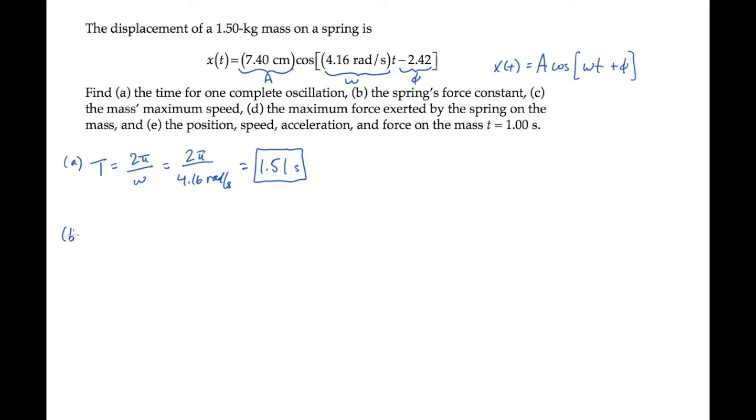Part B asks for the spring's force constant. We know that omega, the angular frequency, is square root of k over m. k is the force constant, so we can solve for it and substitute the values, calculating to find that the spring constant is 26 newtons per meter.